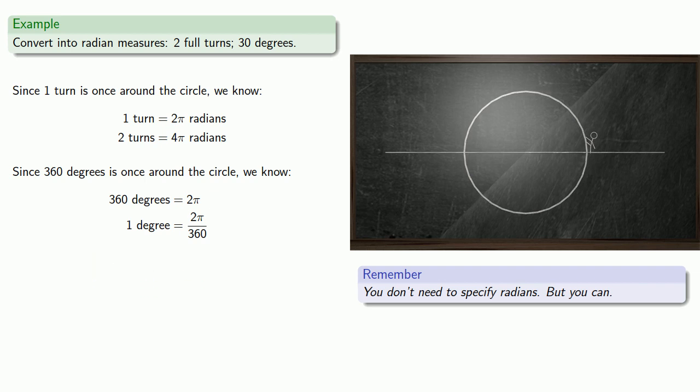Well, that was useless. I didn't want 1 degree. I wanted 30 degrees. Oh, wait. I can get 30 degrees by multiplying by 30. And I get 30 degrees is equal to this product, which we can simplify to π/6 radians.